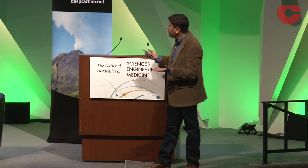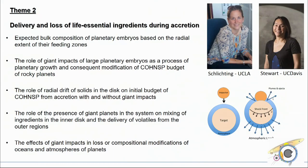Theme two is about delivery and loss of life-essential ingredients during the accretion process and early stages of planet building. What are the expected bulk compositions of planetary embryos? What is the role of giant impacts in affecting, destroying, or potentially delivering life-essential elements? What is the role of radial drift of solids in the disk — how do disk dynamics in certain planetary systems keep elements where they should belong? What is the role of giant planet migration? In our solar system, Jupiter's migration in and out of the system is thought to have played a huge role in delivering water to the inner solar system. Is such a giant planet presence and migration a requirement for delivering life-essential elements?